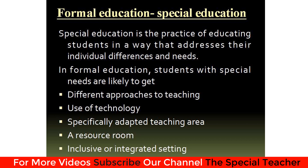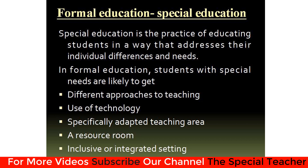In formal education, students with special needs are likely to get different approaches to teaching, use of technology, a specifically adapted teaching area, a resource room, and inclusive and integrated settings. Special schools may be inclusive or integrated, all having different approaches and ways to study since every child is different. Children with special needs are very dependent on technology — they need visual aids, audio aids, etc. Specifically adapted teaching areas address their sensory needs, and sensory sensitivities can be accommodated within or separate from normal classrooms.